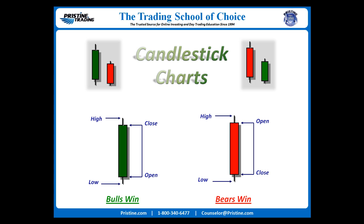Those highs and lows can be called tails, or shadows, or wicks, whichever you prefer. At Pristine, we typically call them tails — topping tails and bottoming tails.